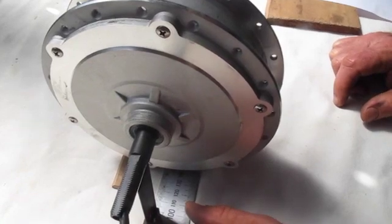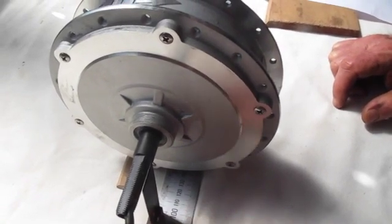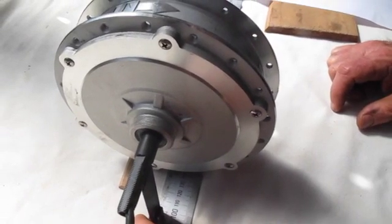In effect, that's the lock nut on the right hand side of this hub. So I've lined that up with the 100mm mark on the ruler.